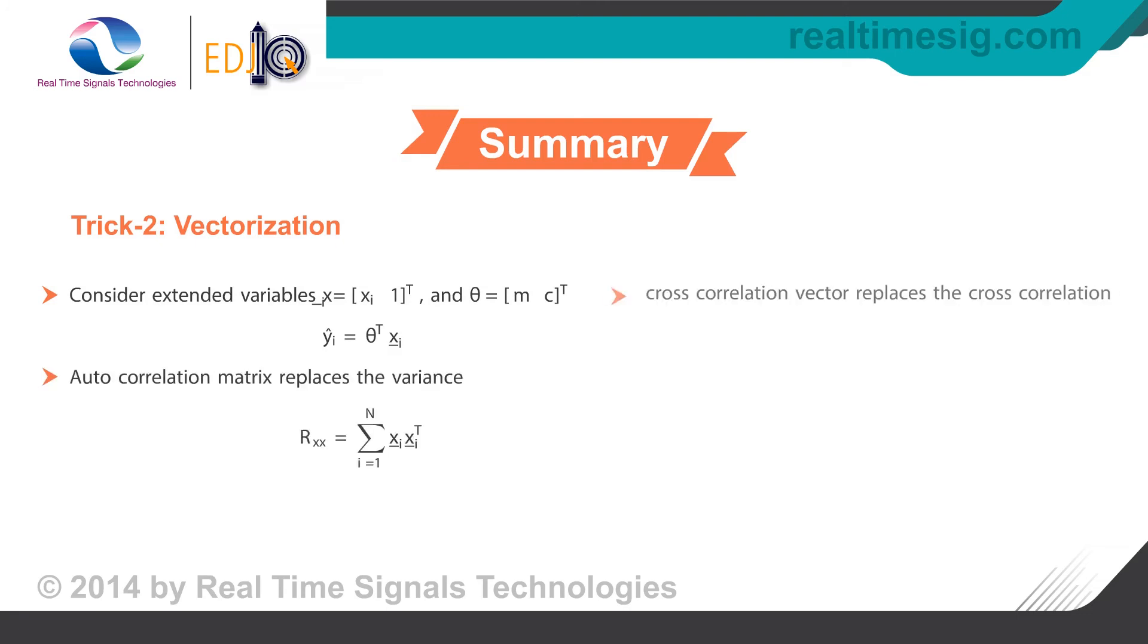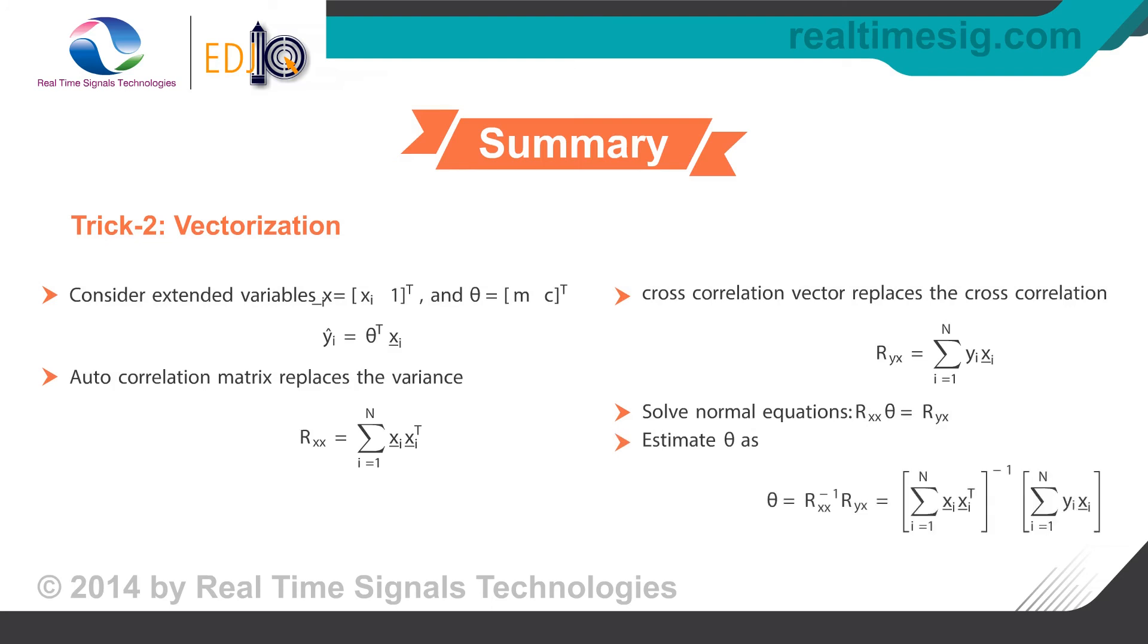Another computational trick is to stack the variables m and c as a single vector, and make a vector of input by appending one. The equivalent of variance for the vector variables is the correlation matrix. Similarly the cross covariance can be replaced by the cross covariance vector. The equivalent of the division for single variable case is the matrix inversion, which gives the expression as in the last equation.